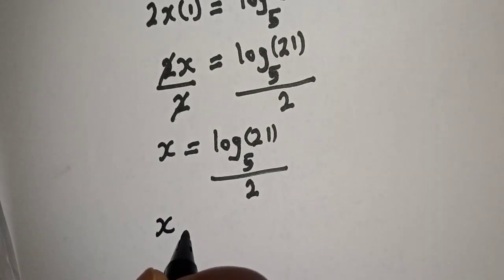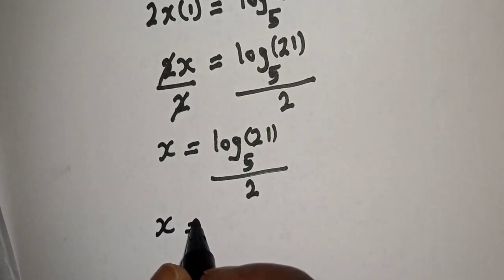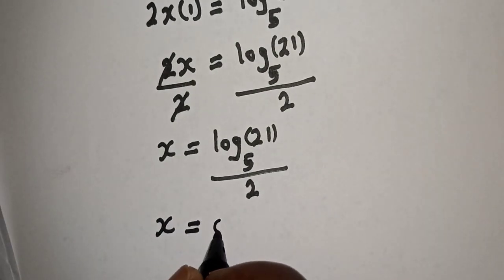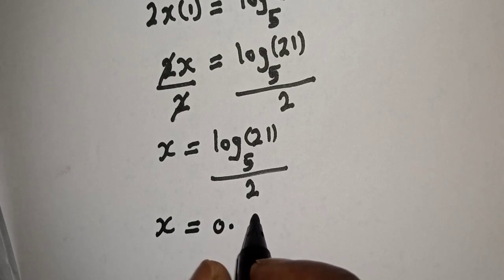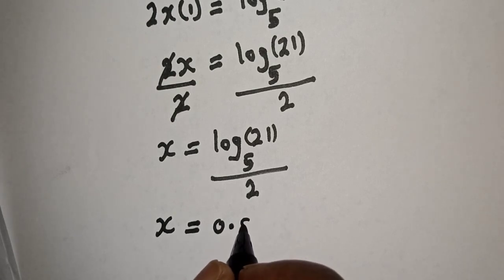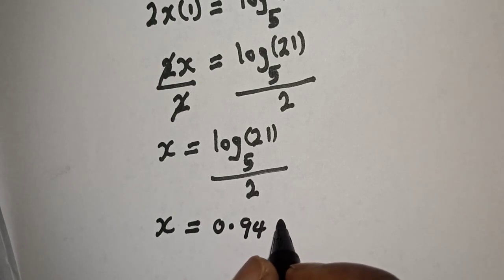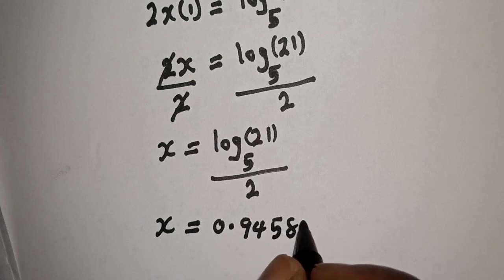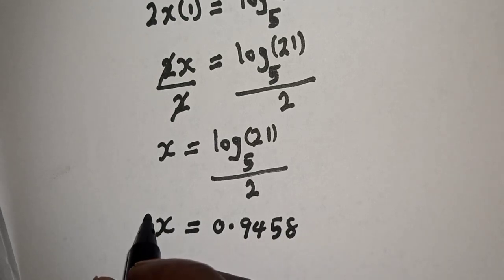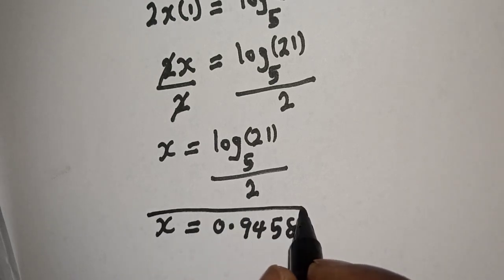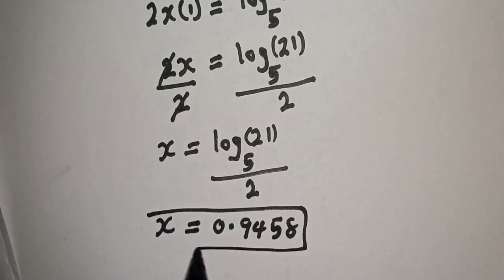x is equal to log 21 base 5 divided by 2, which equals 0.9458. This is the final answer for step 1.